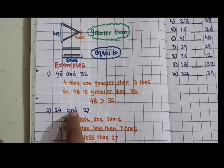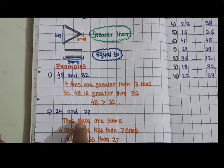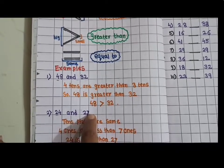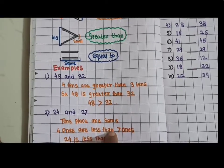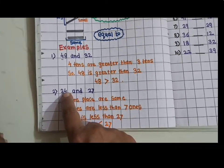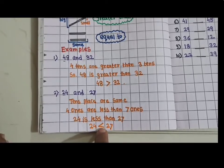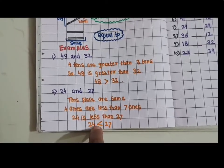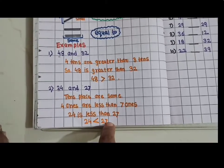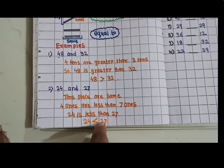Next number 24 and 27. Now see here children, tens place are same, 2 and 2. Now see 1's place, 4 ones. This 4 ones. And here 7 ones. So 4 ones are less than 7 ones. So 1's less, that's why 24 is less than 27. So here 24 and this is the sign of less than. See close point here and open point to open arrow to greater number. This is 24 less than 27.